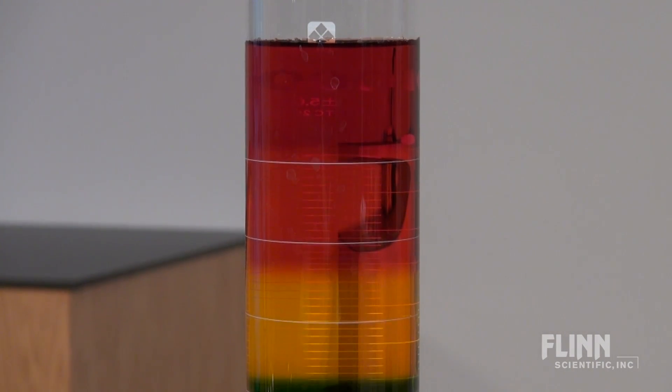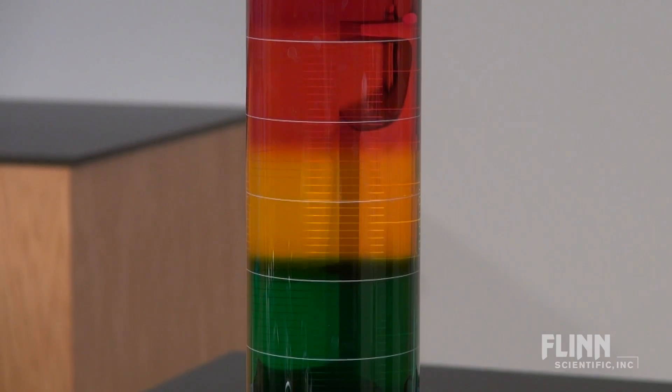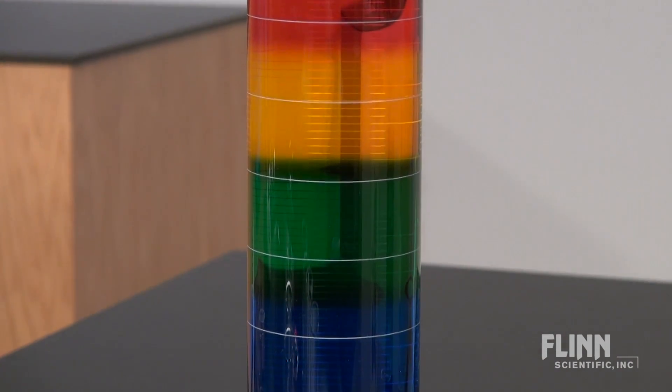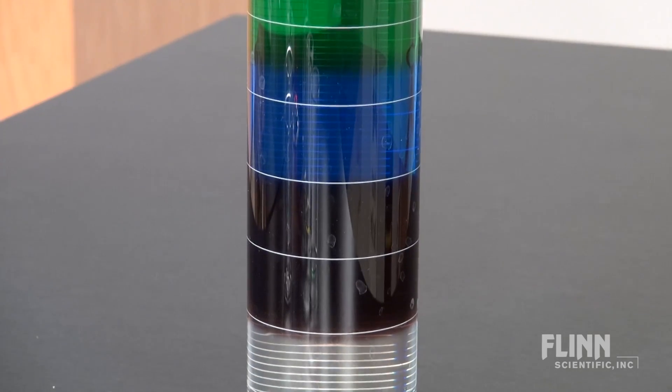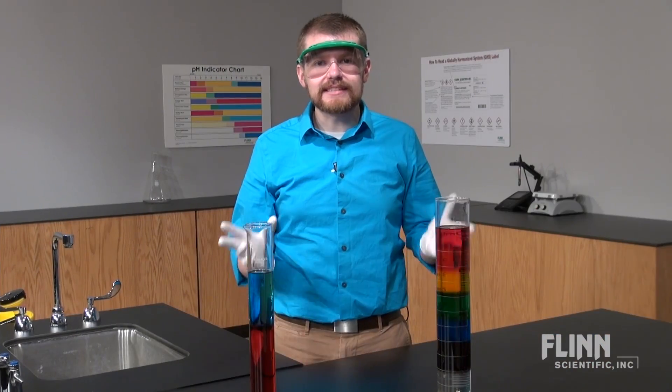The volumes of each solution are the same, but the amount of added sugar is different. As more sugar is added, the mass of the solution increases, thereby increasing the density of the solution.